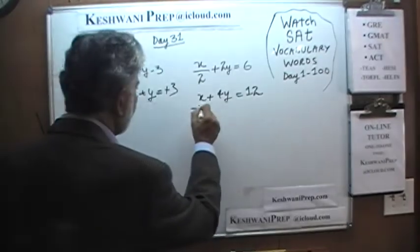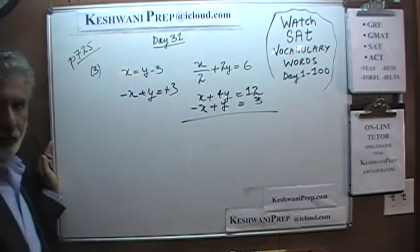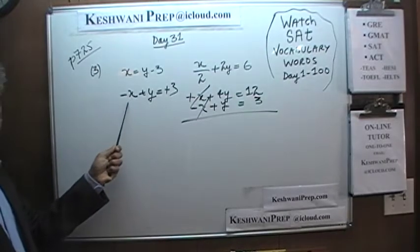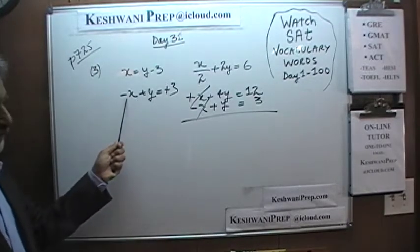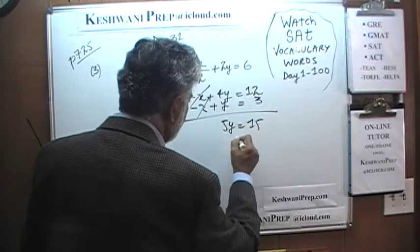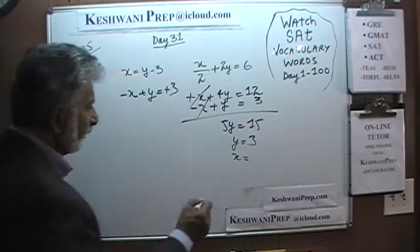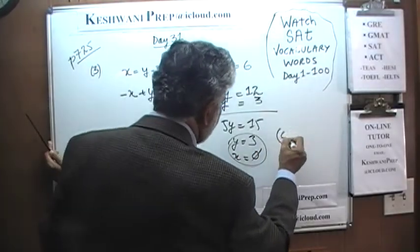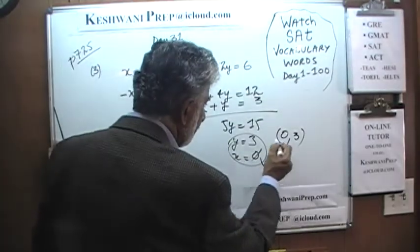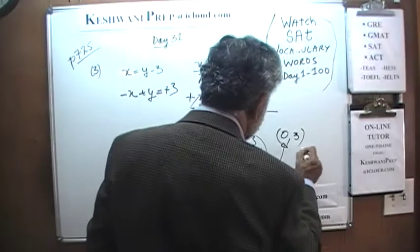We put that underneath. As you can see, we have a positive x and a negative x — which is why I moved x to the other side, so they cancel out. We have 5y equals 15, so y equals 3. Therefore, x equals 3 minus 3, which is 0. The answer is the ordered pair (0, 3). Always pay attention — make sure you put the x coordinate where it belongs. The answer is B.